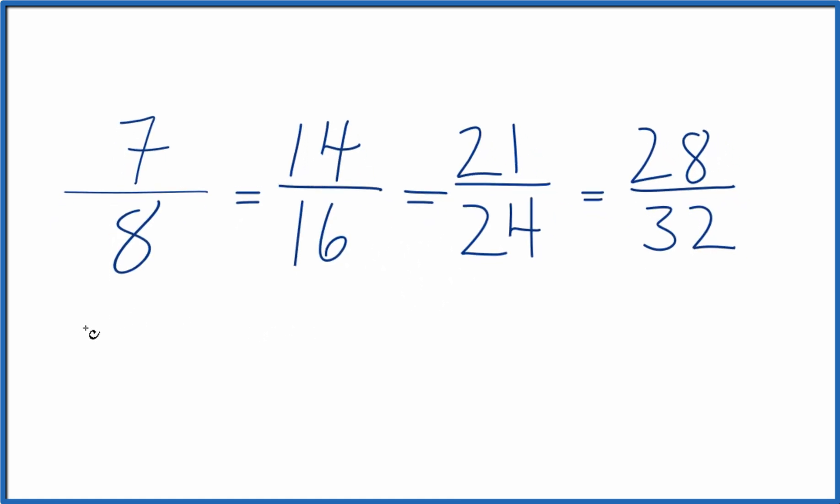And we could write these as ratios. 7 to 8, 14 to 16, and so on. So that's how you write equivalent ratios for 7 eighths.